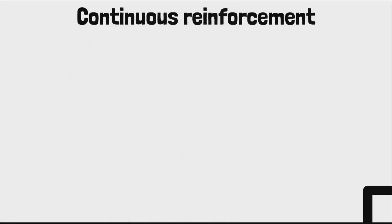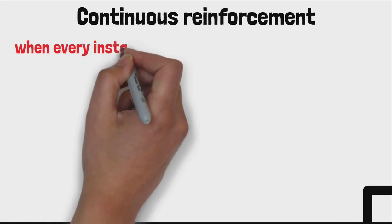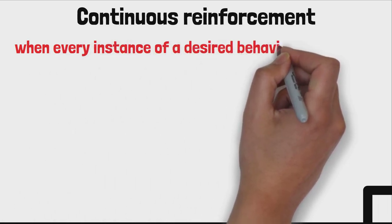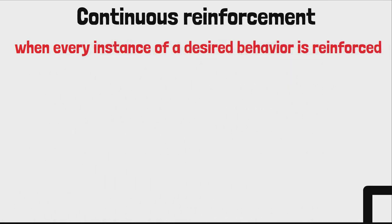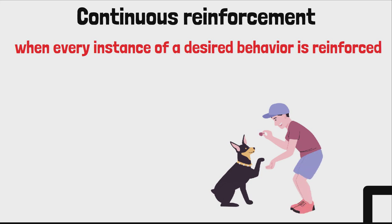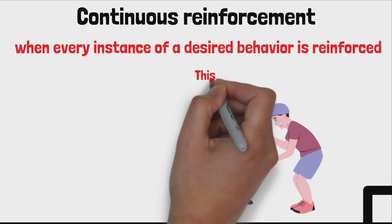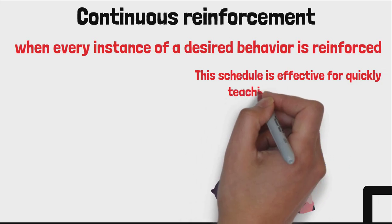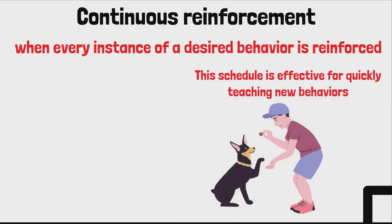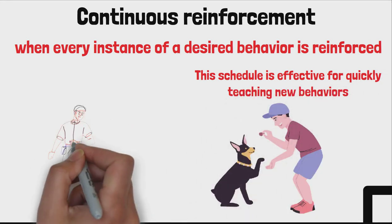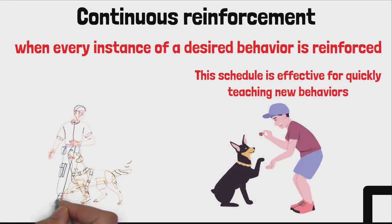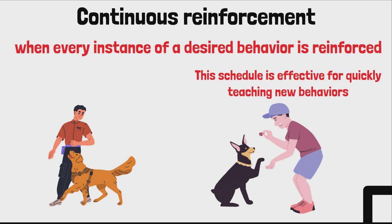First is continuous reinforcement. Continuous reinforcement occurs when every instance of a desired behavior is reinforced. For example, giving a dog a treat every time it sits on command. This schedule is effective for quickly teaching new behaviors because the consistent reinforcement helps establish the desired behavior.